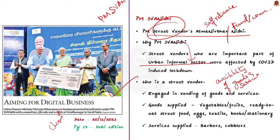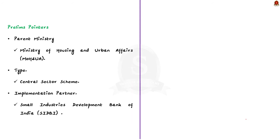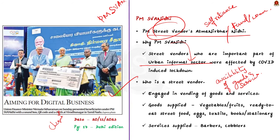Under the scheme, a street vendor is any person engaged in vending goods or services to the public in a street, footpath, pavement, etc. — also called hawkers. Goods supplied include vegetables, fruits, ready-to-eat street foods, eggs, textiles, books, stationery, etc. Services include barbershops, cobblers, etc. The scheme was launched by the Ministry of Housing and Urban Affairs and is a central sector scheme, fully funded by the ministry. SIDBI (Small Industries Development Bank of India) is the implementation partner for scheme administration.